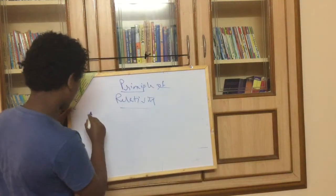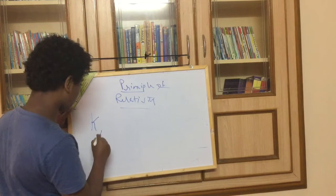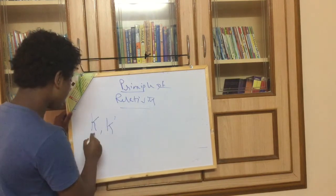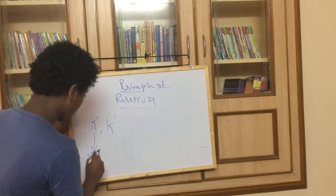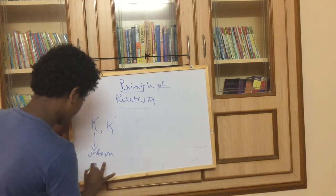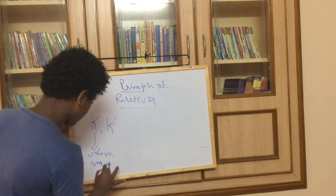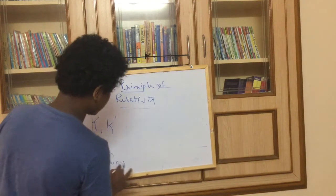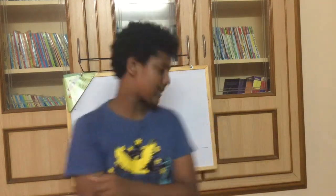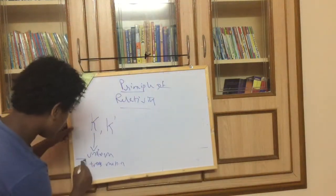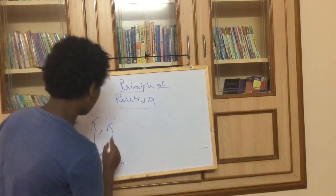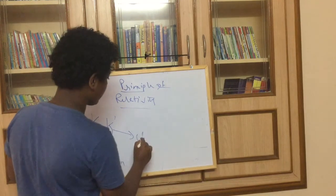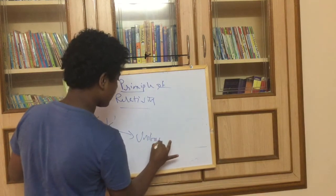So let's take coordinate system K and another coordinate system K dash. If coordinate system K is in uniform translatory motion. So what is uniform translatory motion? It is in motion but it doesn't rotate. It never rotates. It's like K, it's always in motion but it never rotates. That's why we call it uniform translatory motion. And K dash is in uniform motion.